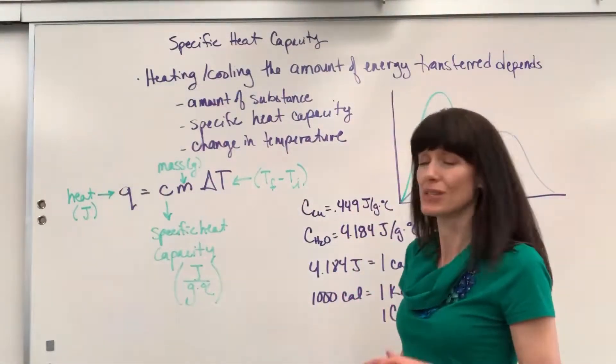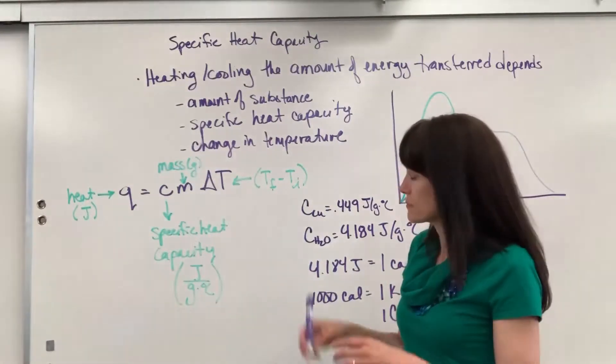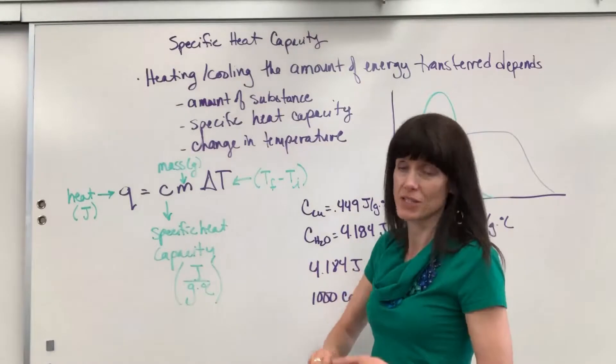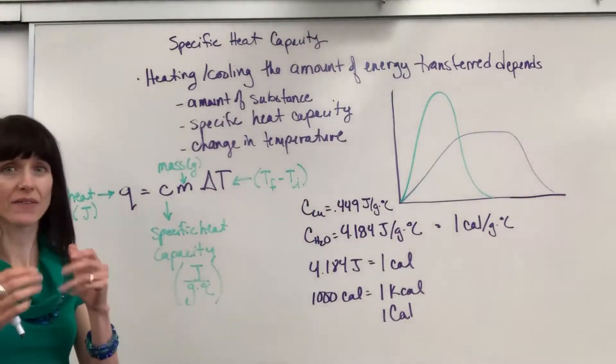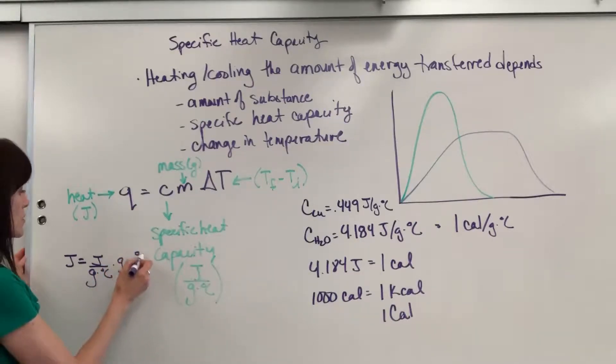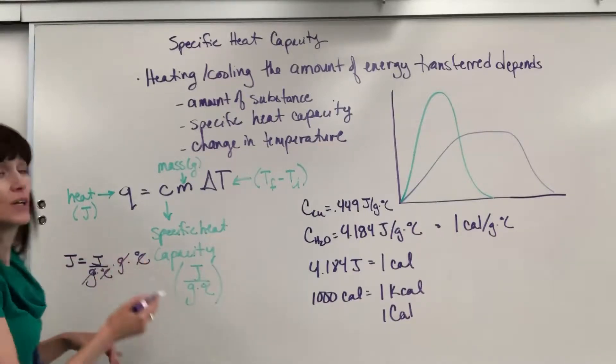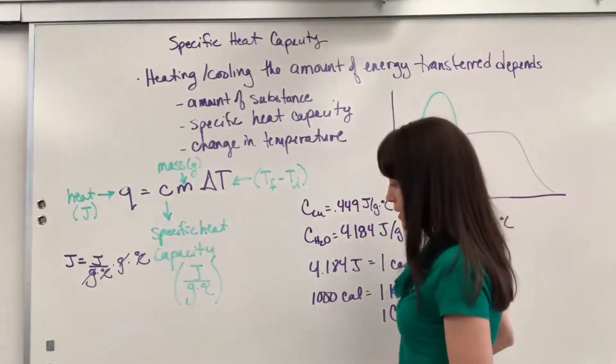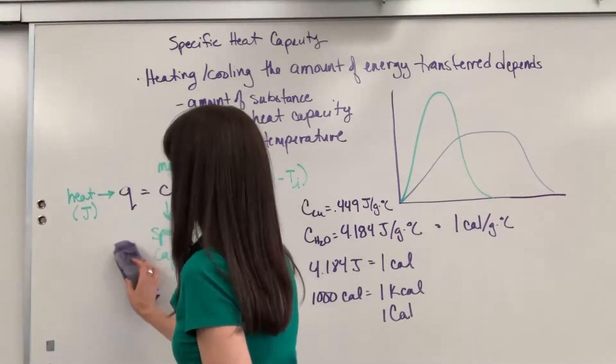It's really rare in chemistry that we don't do final conditions minus initial conditions. Now the units on this, they all match up. If we just do units, look at how these match up. You're going to have joules equals joules divided by grams times degree C times gram times degree C. So you can see grams cancel, degree C cancel, joule equals joule. So that's how it's all set up and the units work out perfectly.